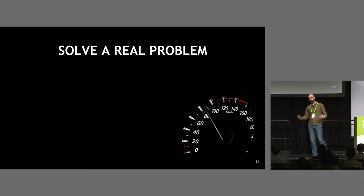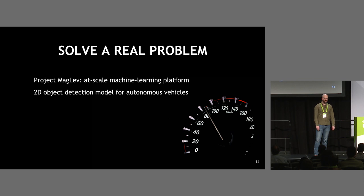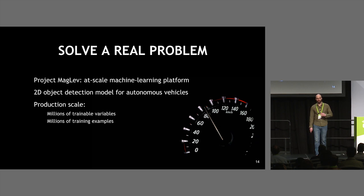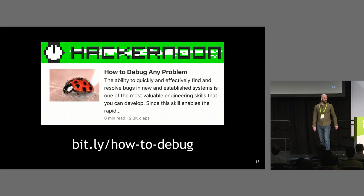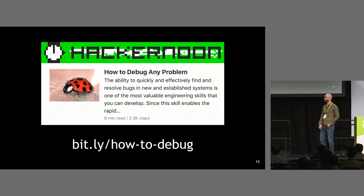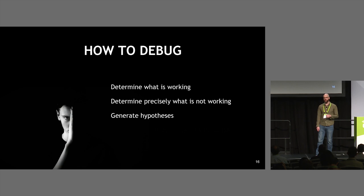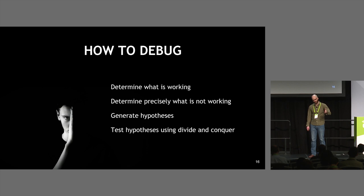I decided to solve a real problem — take a real model and make it train deterministically. This was in the context of Project Maglev, an at-scale machine learning platform. I took a 2D object detection model for autonomous vehicles — production scale, millions of parameters, millions of training examples. The approach: determine what is working, determine exactly what is not working, then generate hypotheses and use divide and conquer. The challenge with TensorFlow is it's hard to divide and conquer, and you need to figure out what's changing between runs rather than just within a single run.